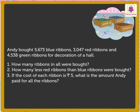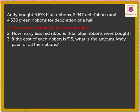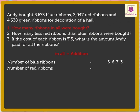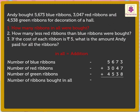Let us check what we have to find out and solve accordingly. Firstly, we have to find out how many ribbons in all were bought. As the phrase 'in all' is used, we will be adding all the ribbons together. Number of blue ribbons is 5673, red ribbons is 3047, and green ribbons is 4538. Adding these numbers gives the answer as 13,258. Thus Andy bought 13,258 ribbons in all.